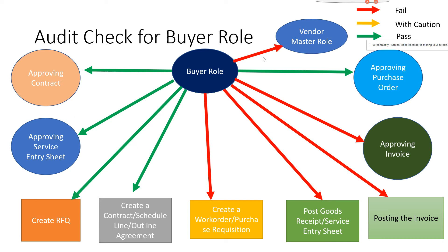A buyer can approve a contract since that's their process, but the reds are complete red flags. Once you go into the system, you need to build a change history report and run backend reports to find the defaults. There can be cases where a buyer created a PO and approved an invoice — that is one thing — but if a buyer created a PO and also updated the vendor master for that same instance, that is very dangerous and could lead to litigation.